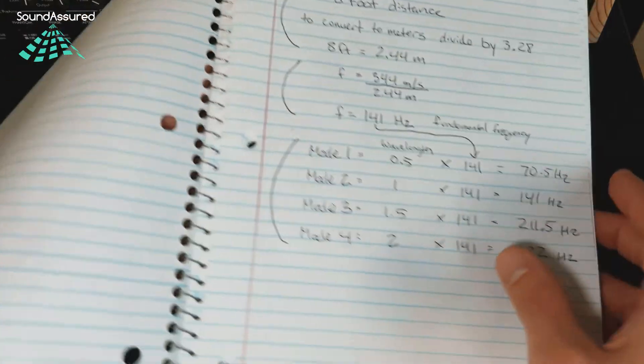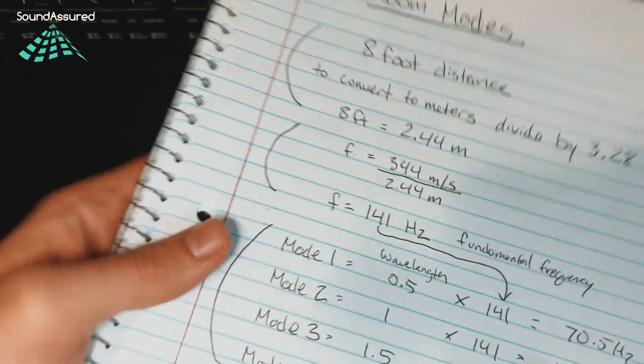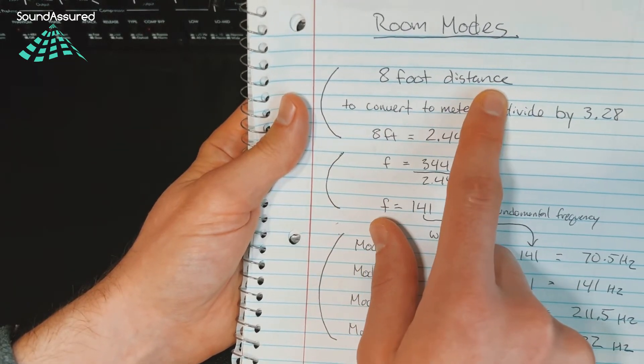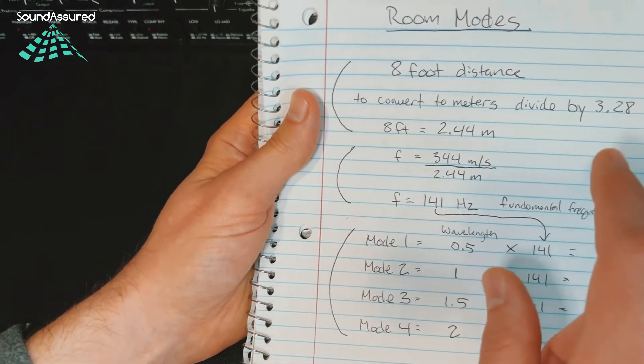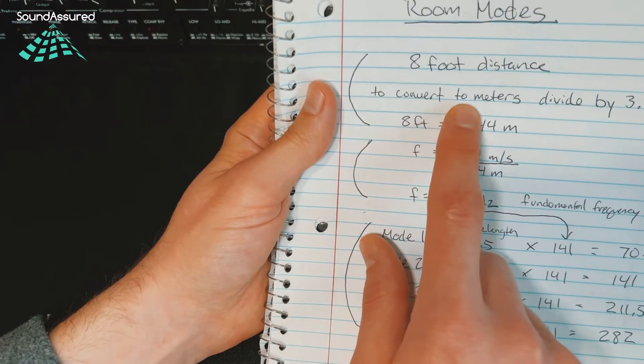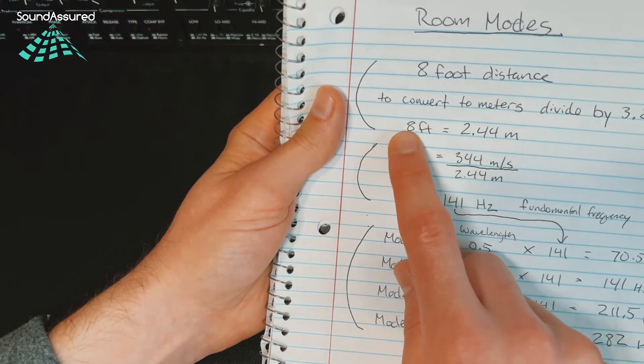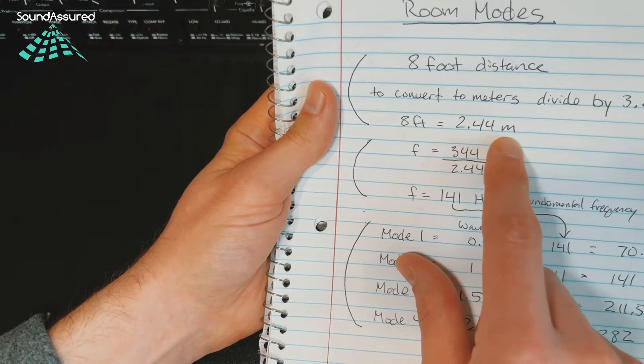Then we'll also do the calculation. This is the most common distance we see, which is from floor to ceiling. And then to convert to meters, you divide the feet by 3.28. So eight feet equals 2.44 meters.